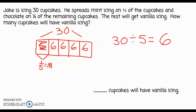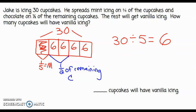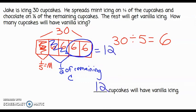If I keep reading the problem, it says that chocolate goes on half of the remaining cupcakes. Looking at half of the remaining cupcakes, I can see that would be equal to 12 cupcakes. Then it says the rest will get vanilla icing. How many cupcakes will have vanilla icing? All that would be remaining is 12 cupcakes. So 12 cupcakes will have vanilla icing.